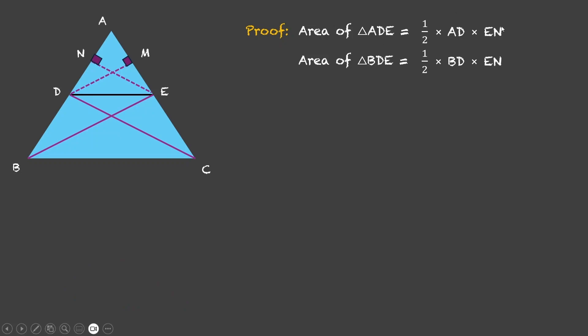Now, we do have two equations. We are going to divide them. So, this will be area of triangle ADE divided by area of triangle BDE equal to this. Half and half will cancel out. EN will cancel out. So, it gives us AD upon BD.